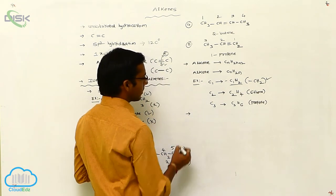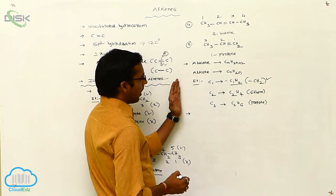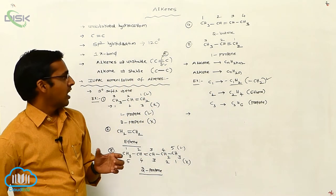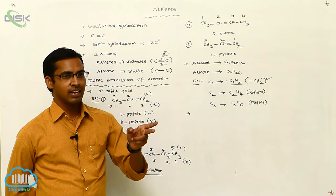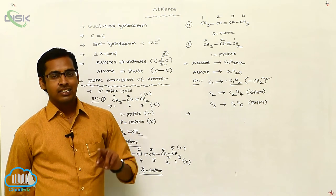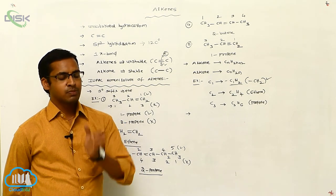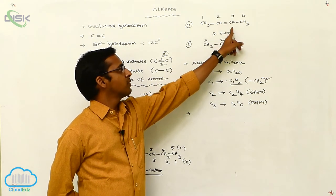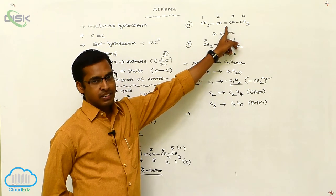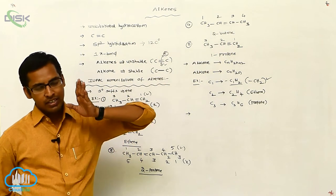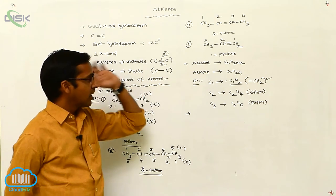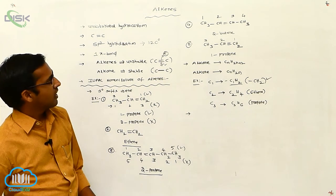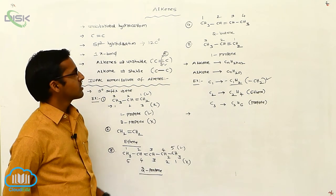Alkenes are of two types: symmetrical and unsymmetrical. In a symmetrical alkene, the plane passed through the double bond gives identical atoms. In an unsymmetrical alkene, the plane through the double bond gives non-identical atoms. The behavior of symmetrical and unsymmetrical alkenes will be discussed later.